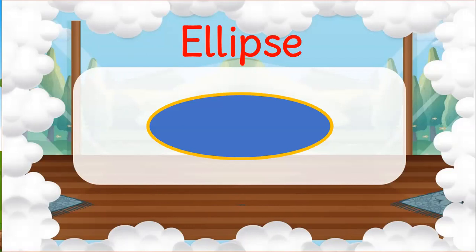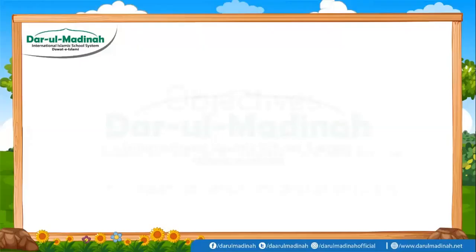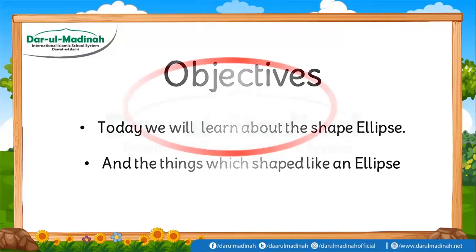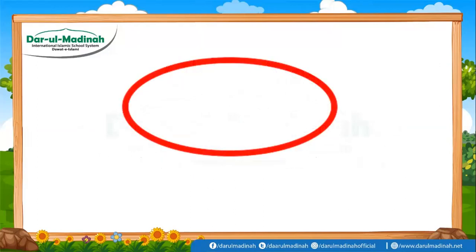Ellipse is a shape. Ellipse एक शकल का नाम है. आईए देखते हैं, इस शकल की कौन-कौन सी चीज़ें होती हैं? सबसे पहले, इलिप्स की शकल को देखिए. प्यारे बच्चों, ये इलिप्स है. This is ellipse. सब मेरे साथ मिलकर पढ़ेंगे: This is ellipse.